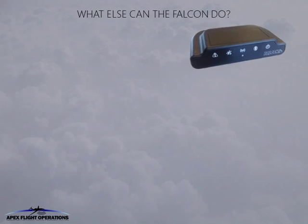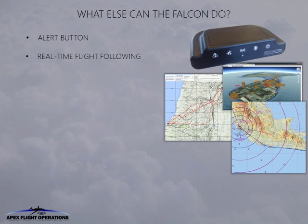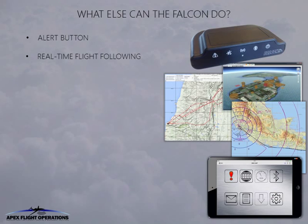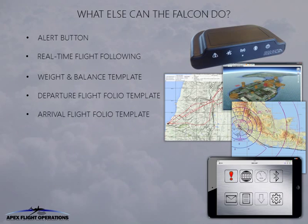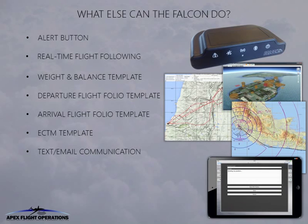The Falcon has been designed to provide a wide variety of operational and safety information to aircraft owners and operators. An alert button allows the crew to notify the operation center of emergency situations. Real-time flight following provides precise oversight of your aircraft's movements, ETAs and location. The Falcon iPad app provides the air crew with a number of templates to easily capture weight and balance values, departure and arrival information and engine condition trend monitoring readings, all of which are then transmitted to the operation center in real-time. The air crew and operations staff can also exchange text and email communication from anywhere in the world.